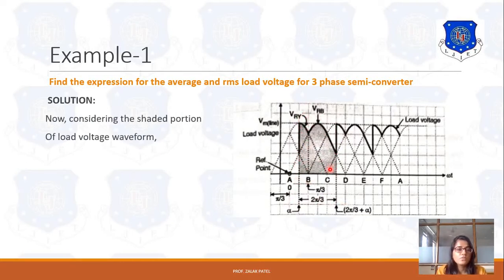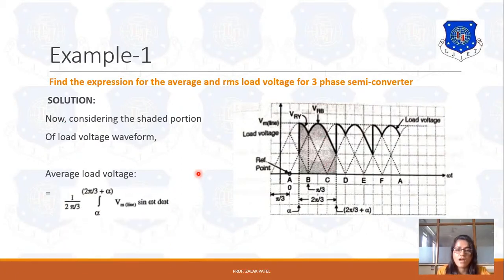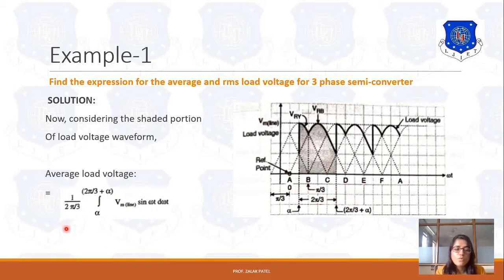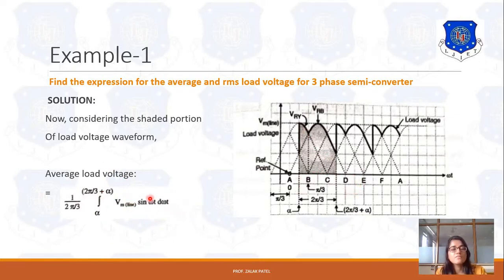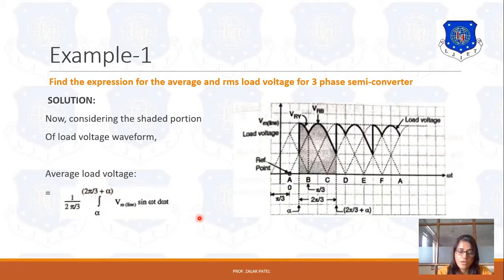Considering the shaded portion of the load voltage waveform, we can write that the average load voltage is given by 1 upon (2π/3). Why 1 upon (2π/3)? Because the waveform of the shaded portion is limited up to 2π/3. That's why it is (1/(2π/3)) times the integration from firing angle alpha to (2π/3 + alpha) of Vm·sin(ωt)·d(ωt).